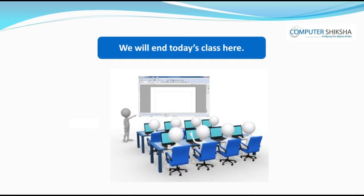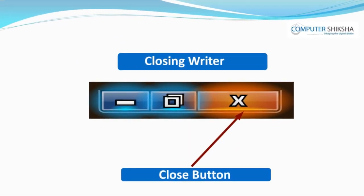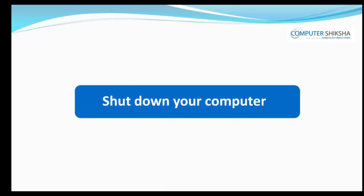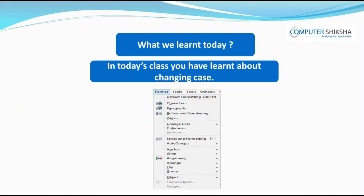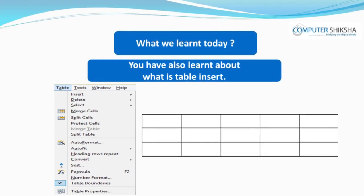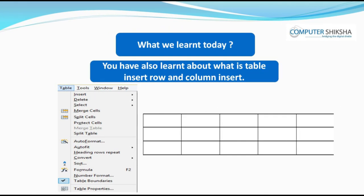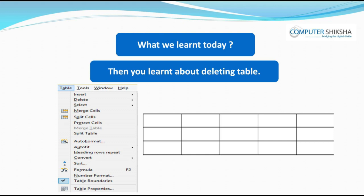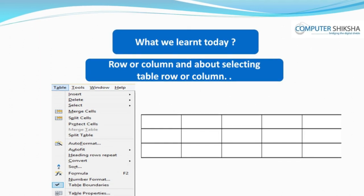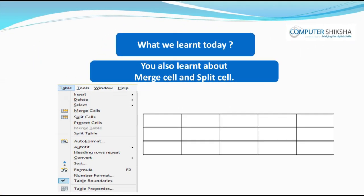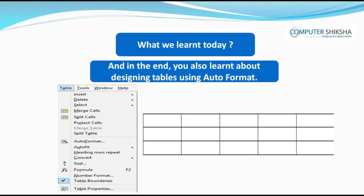We will be finishing this class now. All of you should close the writer file and properly shut down your computer. In today's class, you have learnt about changing case. You have also learnt about table insert, row and column insert. Then you learnt about deleting table, row or column, and about selecting table, row or column. You also learnt about merge cell and split cell. And in the end, you learnt about designing tables using Auto Format. Thank you.